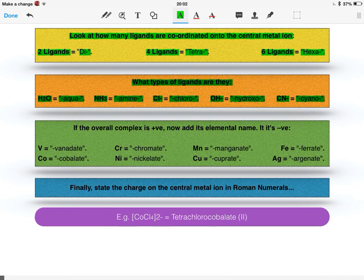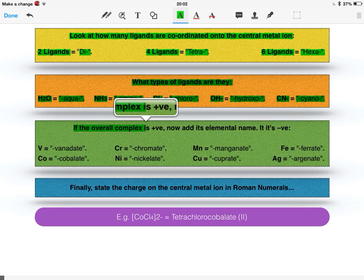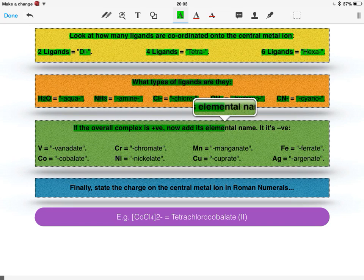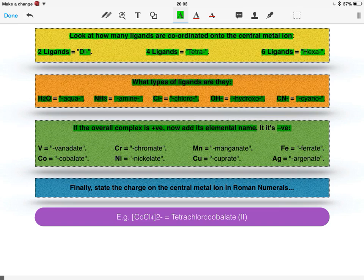Then we look at the overall complex's charge. So if it's positive, we now add the elemental name. If it's negative, then we add the following. I won't bother saying all these because you can read it, you can apply it. It's fairly straightforward.